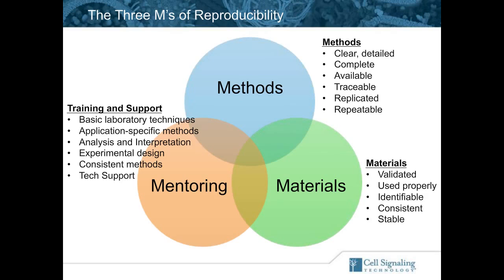Whenever you take an antibody and use it in a different application, you need to revalidate that antibody. Students and scientists learning how to understand and interpret their data, set their experiments up correctly, and use the same methods over and over again — and understanding the difference between biological replicates and technical replicates — was cited in both studies as being a problem. We also feel that tech support is a component of mentoring, and that when you have an issue with a company's reagent, you should be able to call that company and get help — whether guidance, a protocol, or other assistance. Companies should play a role in that mentoring process.